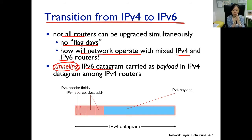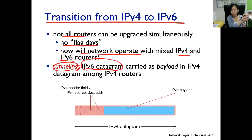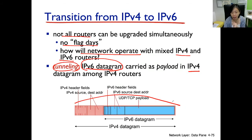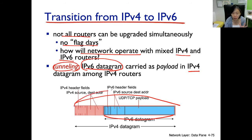Once the packet hits the border between IPv6 and IPv4, the router standing at the border implements both IPv4 and IPv6. So this border router takes the IPv6 packet generated in the IPv6 space and encapsulates it into an IPv4 packet. So the IPv6 packet — the original one — is contained inside this bigger IPv4 packet.